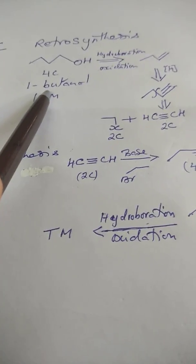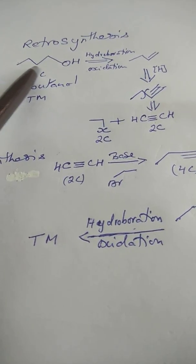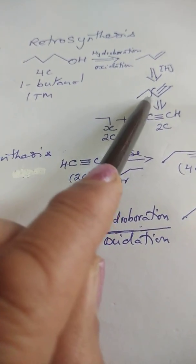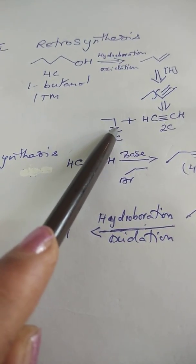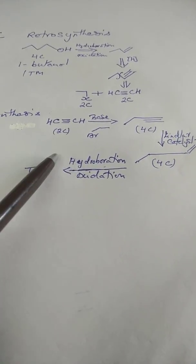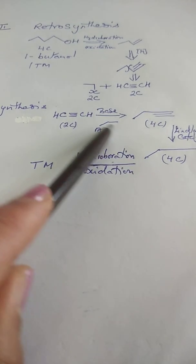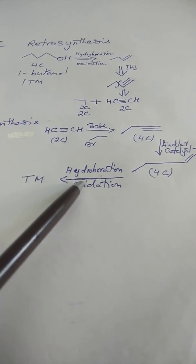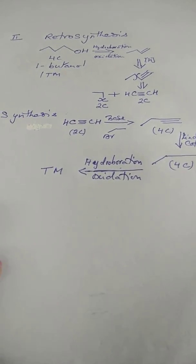The alkene, on anti-Markovnikov hydroboration-oxidation, gives the primary alcohol — our target molecule. So the complete synthesis: acetylene in the presence of a base and alkyl halide gives the stepped-up alkyne; partial reduction gives the alkene; hydroboration-oxidation gives 1-butanol.